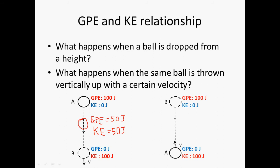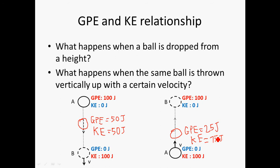Similarly, when you throw an object upward, it initially has 100 joules of KE and 0 joules of GPE. When it reaches its highest point where velocity is zero, KE becomes 0 and GPE becomes maximum — all the KE has been converted to GPE. At a position 25% of the final height, you'd expect 25% of the final GPE and 75% KE. Adding them always gives 100%, so conservation of energy holds.